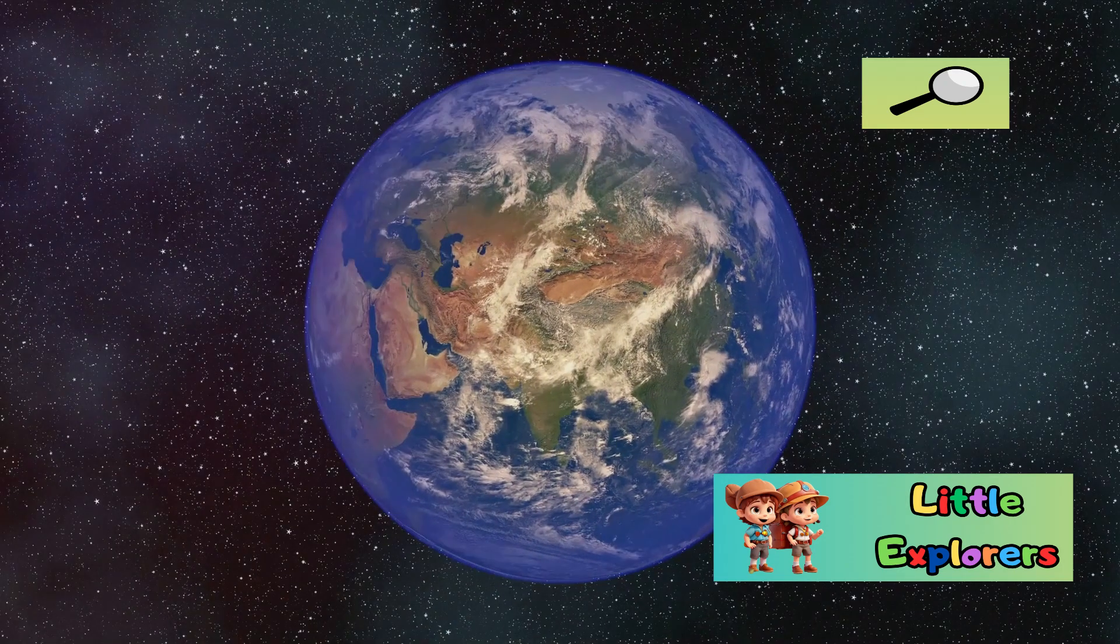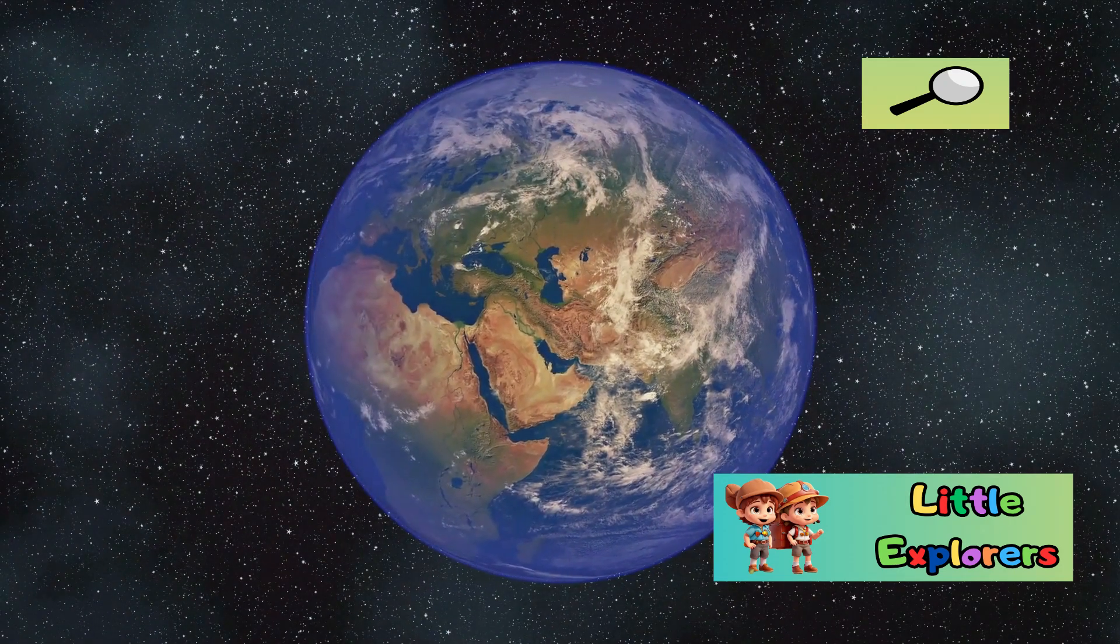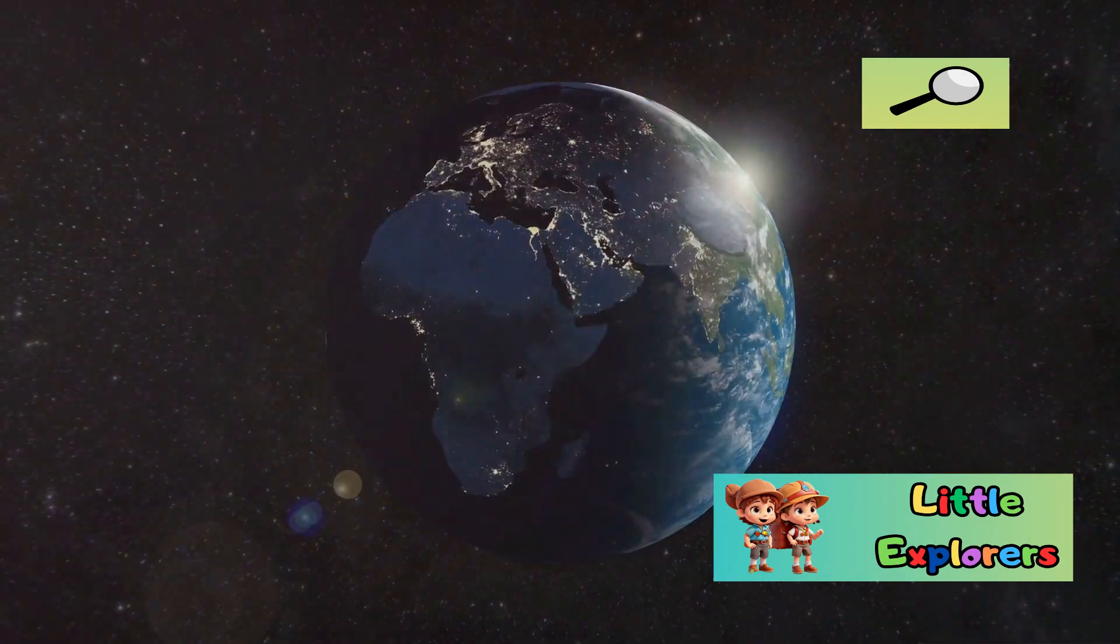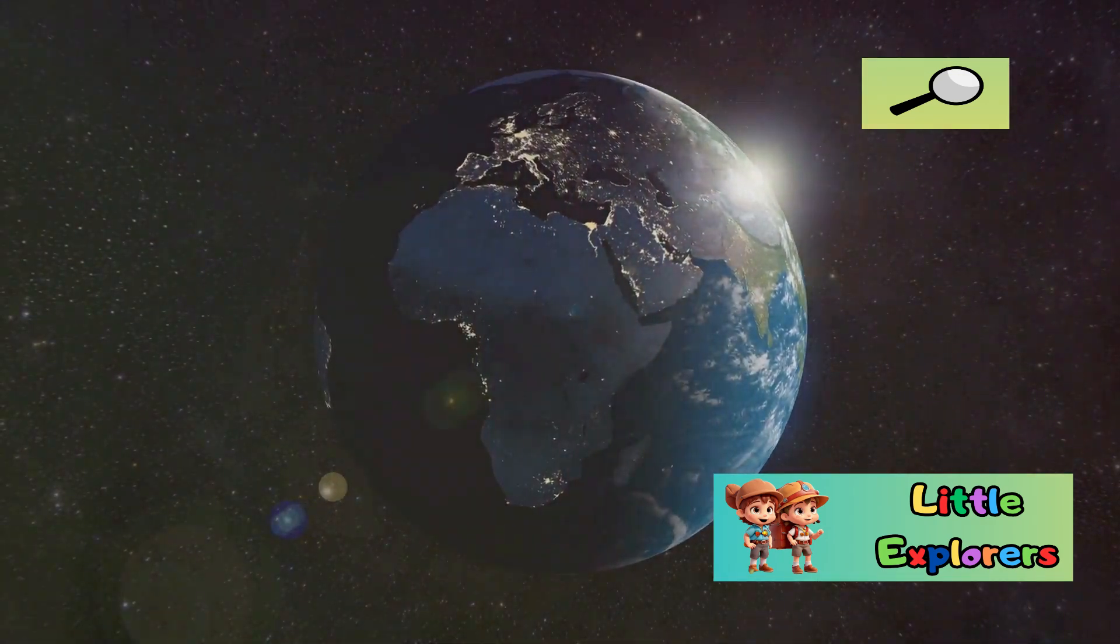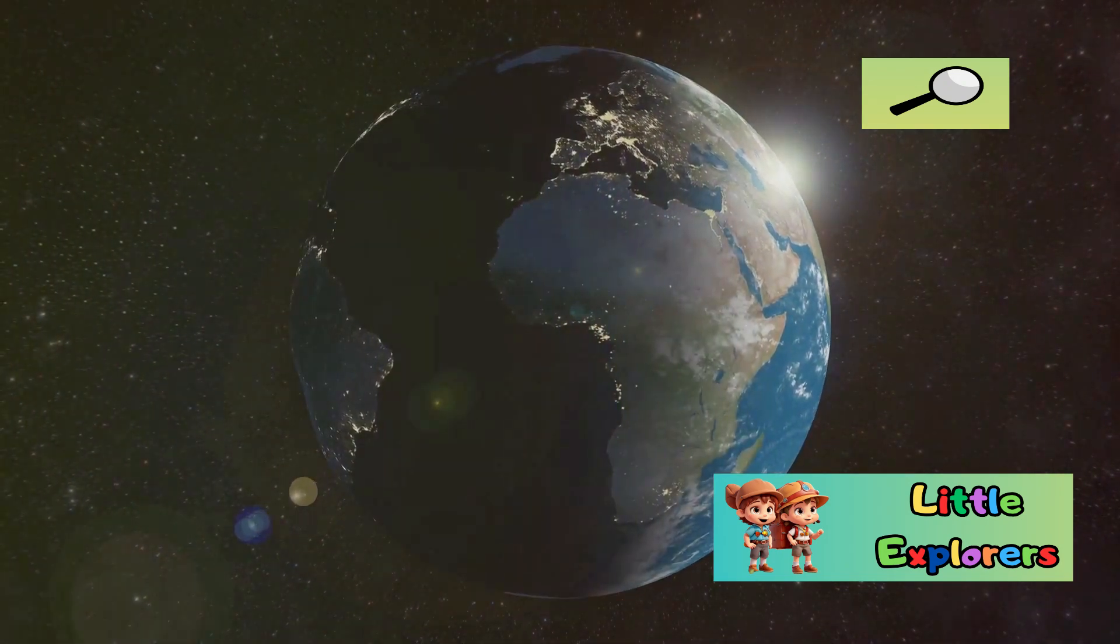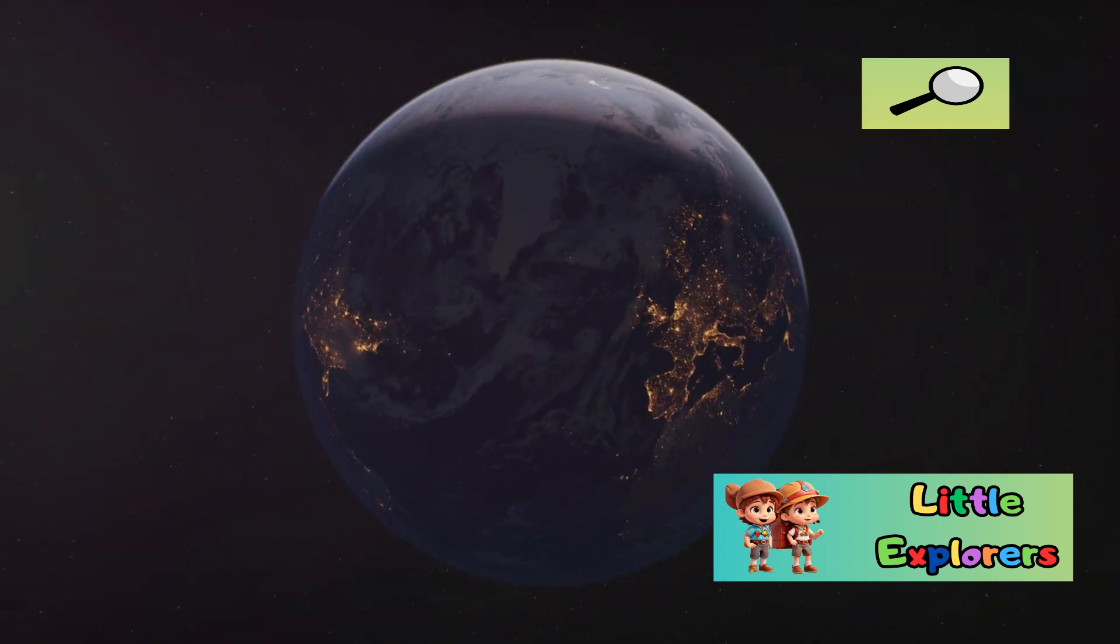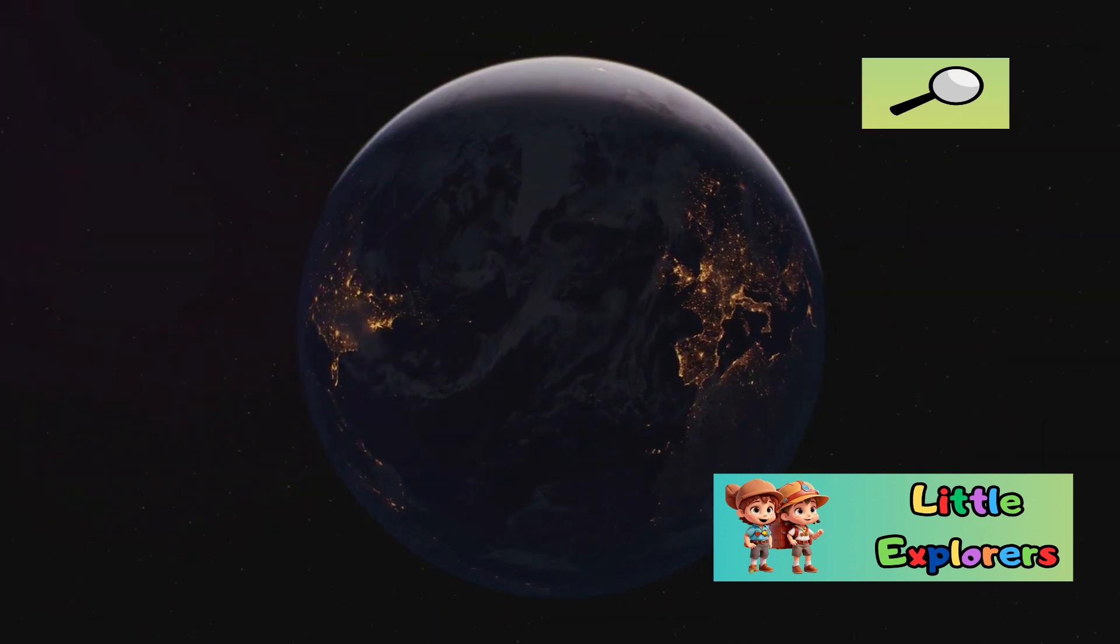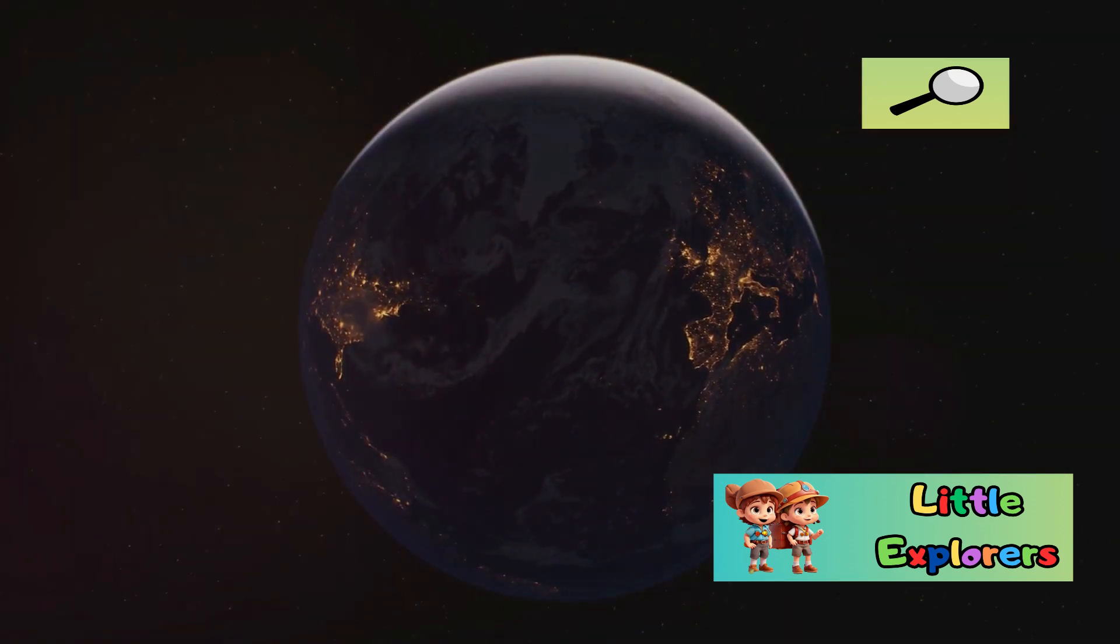From our vantage point in space, we can observe the most striking feature that distinguishes Earth: its vibrant blue color. This is not just an aesthetic detail. It's a testament to the presence of something extraordinary, liquid water. Water covers over 70% of Earth's surface, shaping its landscapes, driving its weather patterns, and ultimately making life possible.